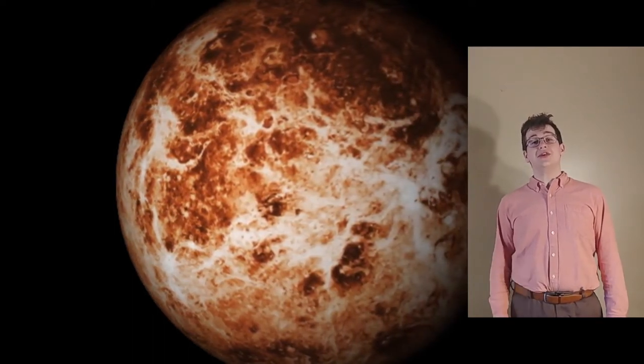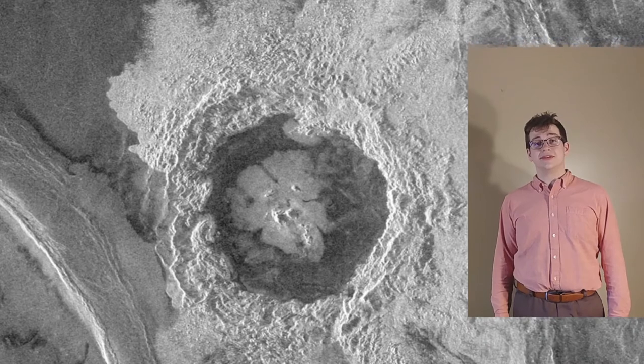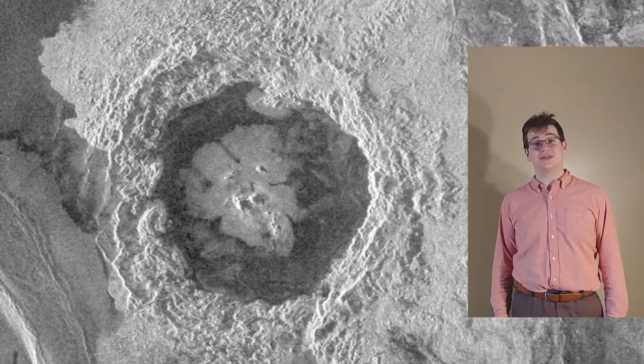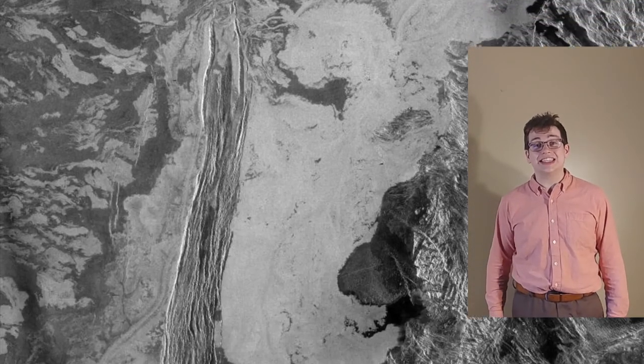Due to the thick clouds, we cannot see the surface of Venus directly. However, using radar, NASA's Magellan mapped about 98% of the surface of Venus. Here are a few images of the surface of Venus. These first two feature craters. This is Isabella Crater. This is Dickinson Crater. And in this final image, we have an ancient lava flow. You heard that right. Venus has volcanic activity.